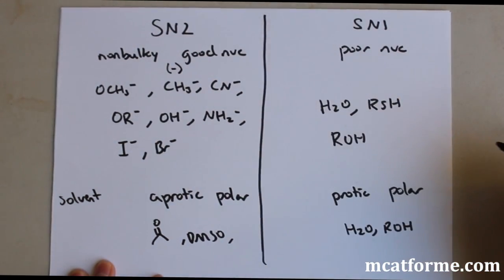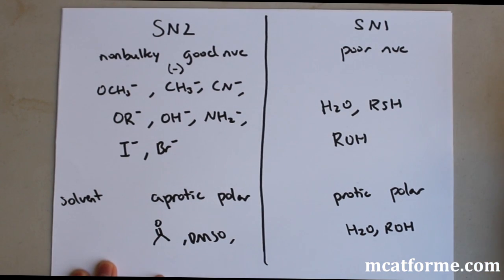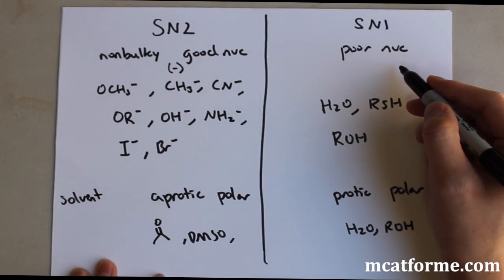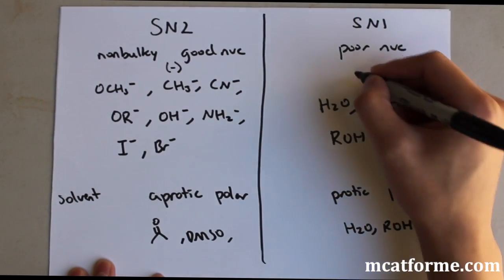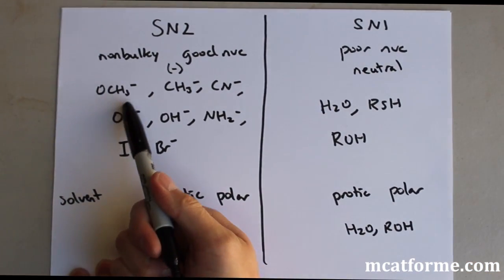Non-bulky good nucleophile, you can think of negative charge. If it's small and it's negative, let's just say that it's a good nucleophile and it's non-bulky. Poor nucleophile is going to have neutral charge generally. So it's going to be neutral and rather small.